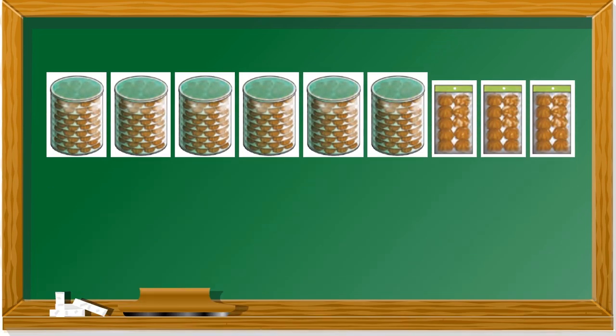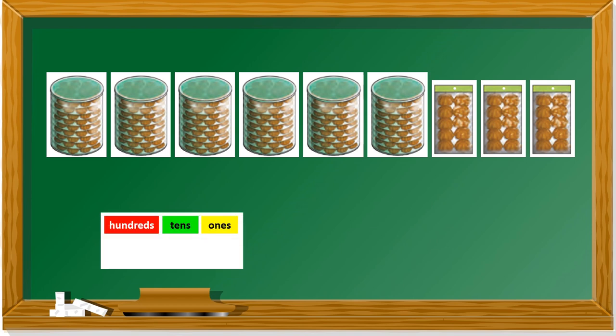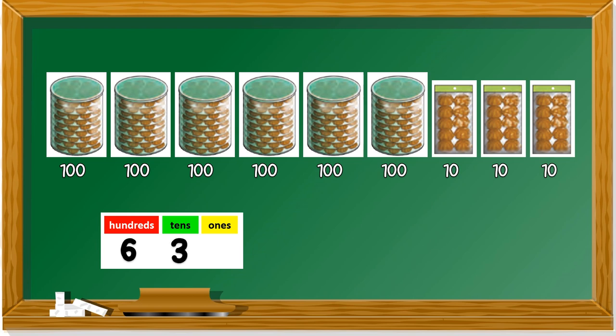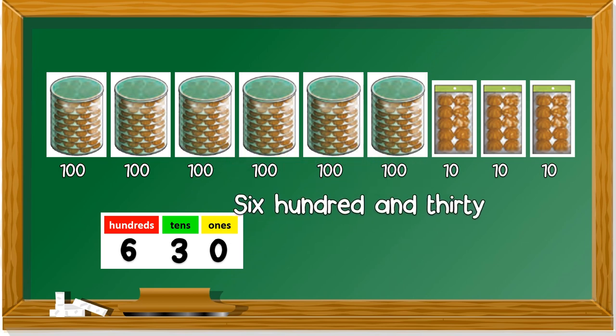Let us look at another example. Wow, there are so many kuihs now. First, draw the table with hundreds, tens, and ones. Let's count how many hundreds — there are six. How about tens? Three. Any ones? No. So the answer is six hundred and thirty — 630.